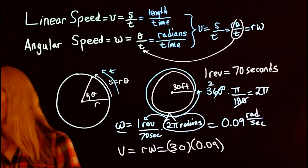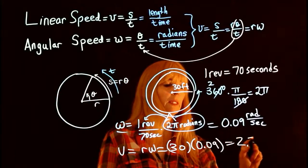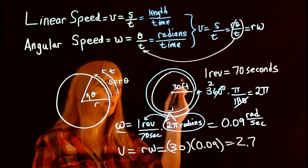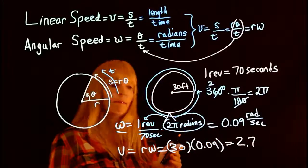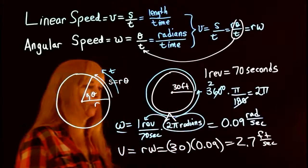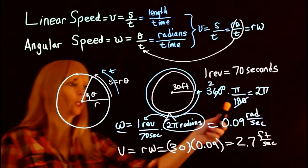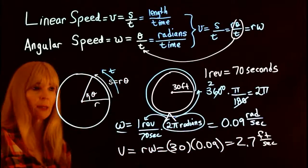So I end up and I get my answer as 2.7. But think about this: if my radius is in feet, then this answer is in feet per second. So these are giving you two different things as far as unit-wise, but they're still the same thing.